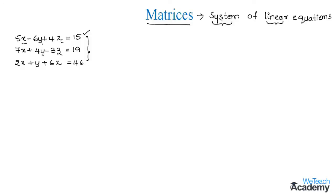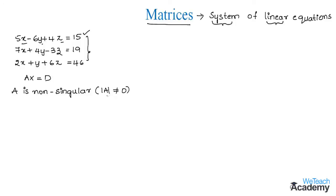We already know that equations can be solved in many ways, but in this section we are going to deal with solving systems using matrices. First, we need to convert the given equations into the form AX = D. Here A represents the coefficient matrix. The next step is to check whether matrix A is a non-singular matrix, meaning the determinant value of A is not equal to zero. The main purpose is to find the elements of matrix X.